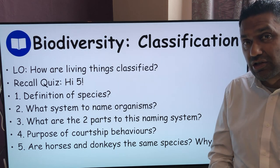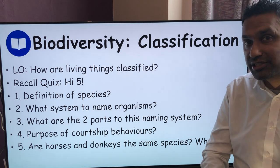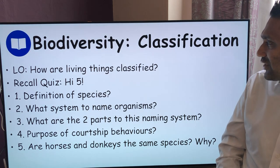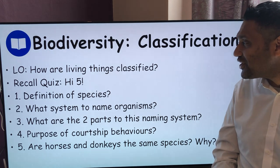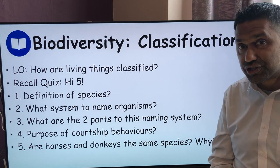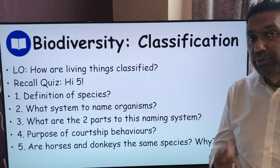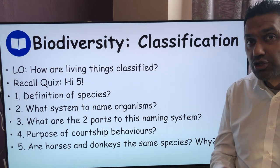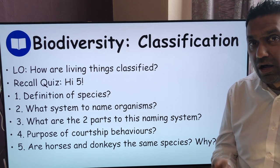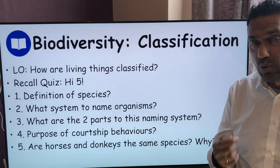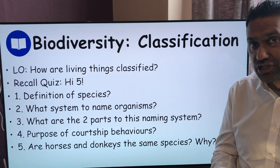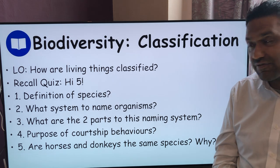Pause the video, then come back to the answers after you've unpaused it. So if you've done those, here's the first answer. The definition of a species is a group of organisms with similar features who can breed to produce living fertile offspring. That is the definition of a species.